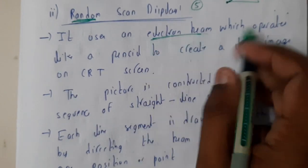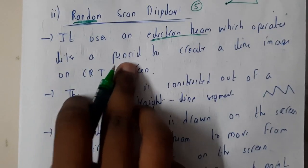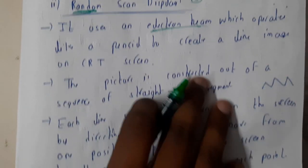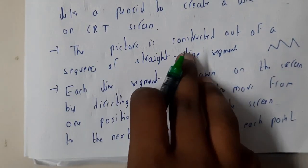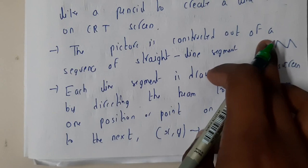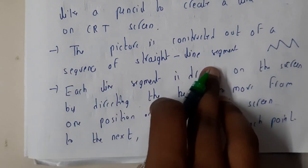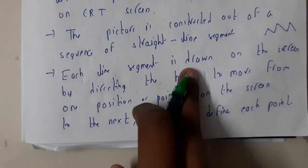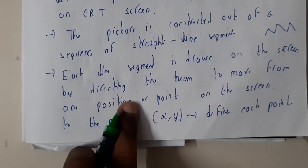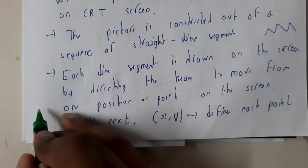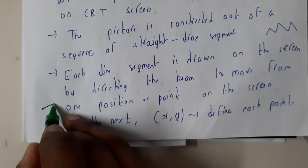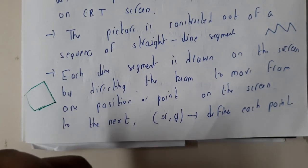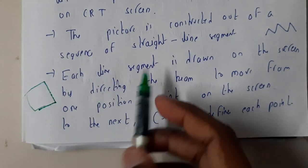It uses an electron beam, which operates like a pencil to create a line image on the CRT screen. The picture is constructed out of a sequence of straight lines. Each segment is drawn on the screen by directing the beams. If you observe, we are directing the beams in this way, and that is the reason why we are getting a line like this. If you continue like this we get the full shape.